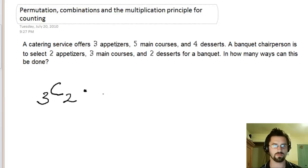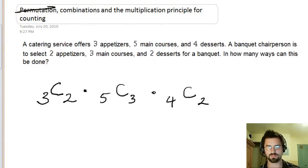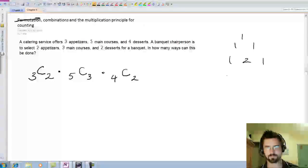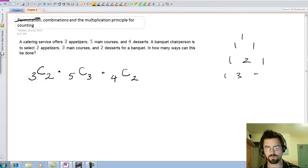So, five main courses, we're choosing three. So, that's five choose three. These are all combinations. The order does not matter, so permutation is out. We're not going to have three P two. And lastly, out of the four desserts, we're choosing two.